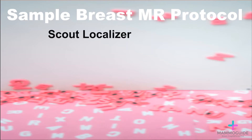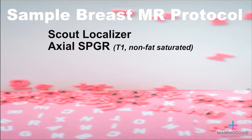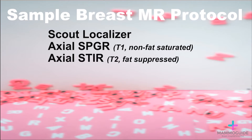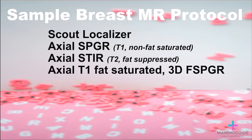It starts with a scout localizer, followed by an axial SPGR sequence — a T1-weighted sequence without fat saturation. Next, a T2-weighted sequence, or an axial STIR, which is T2-weighted with fat suppression. Next, an axial T1 fat-saturated sequence marks the beginning of the dynamic series. This is the pre-contrast image.